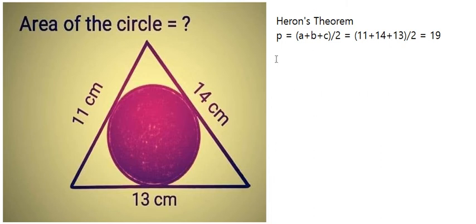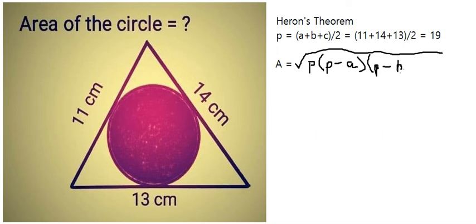And now here is the formula of the theorem. So we have A equals to the square root of p times p minus a times p minus b times p minus c.